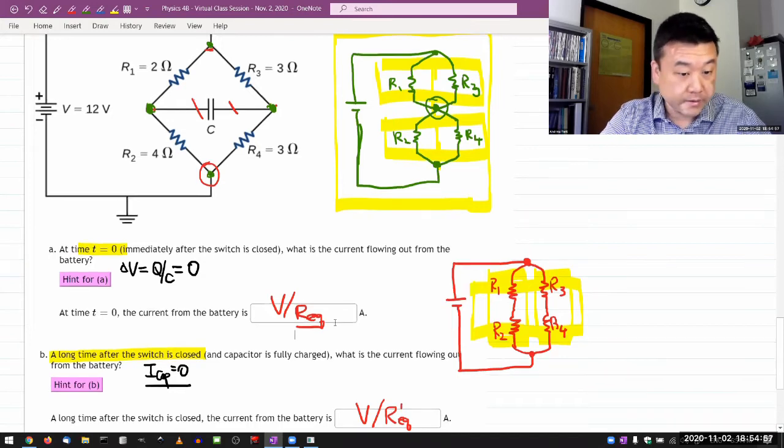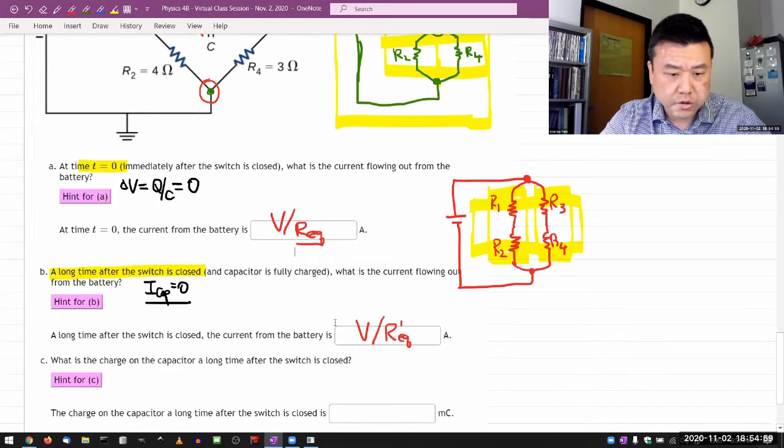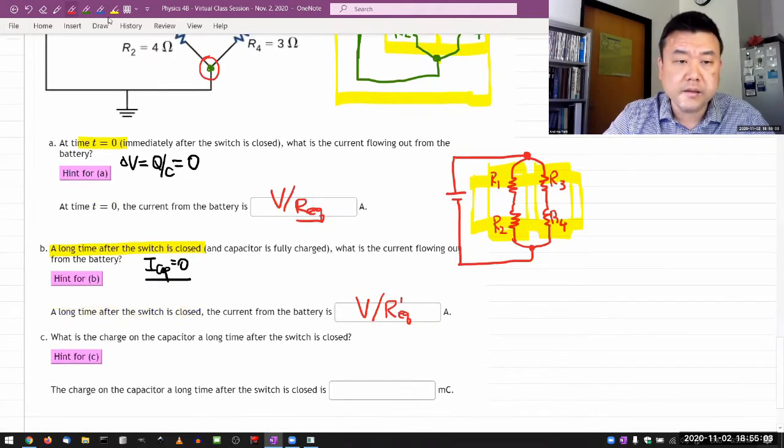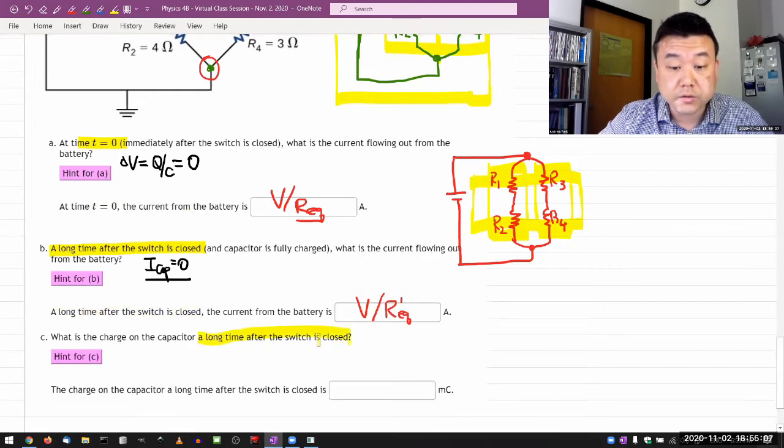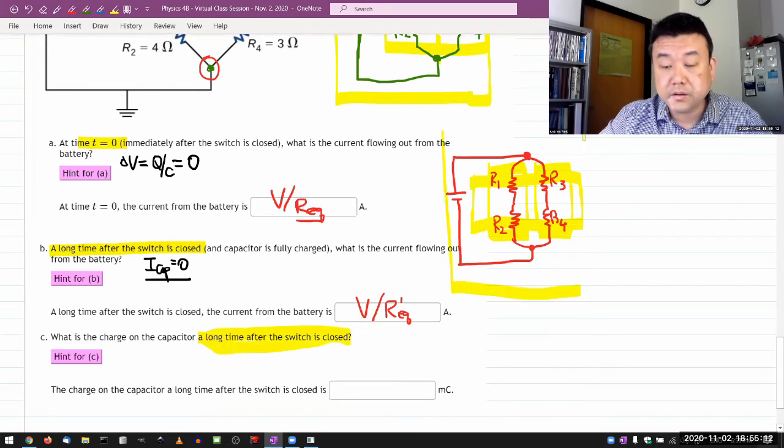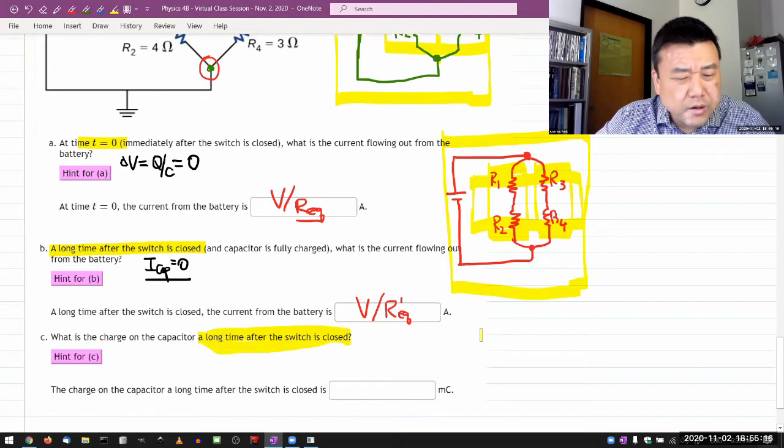So in part C is the follow-up question about part B, because it is still at the same limit, a long time after the switch is closed. So I can still have this picture in mind as I'm answering part C.